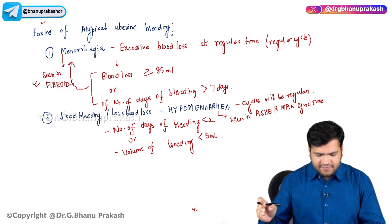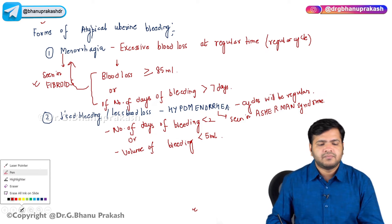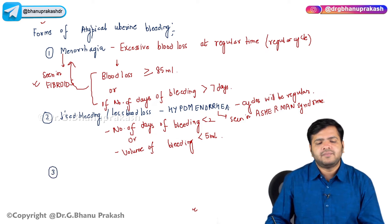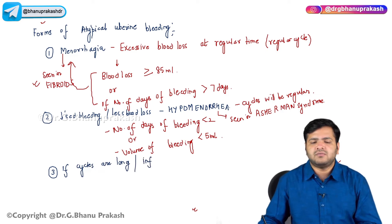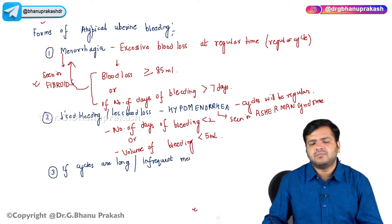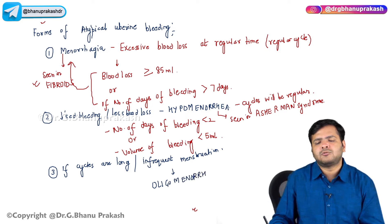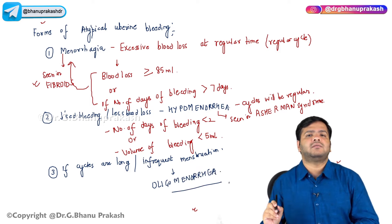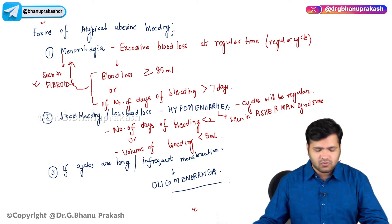Now, if the cycles are long or there is infrequent menstruation, then it is called oligomenorrhagia.